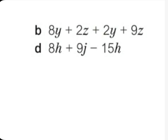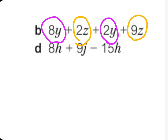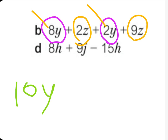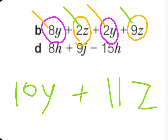We take the same variables together and add them, and then do the same for the other variables. So here we have 8 plus 2 equals 10, and we write y next to it, plus 2z plus 9z equals 11z. So the answer is 10y + 11z — you take the same variables together, add them, then take the others and add them.